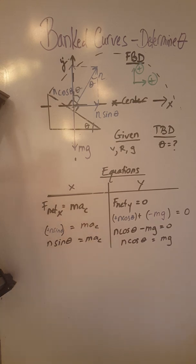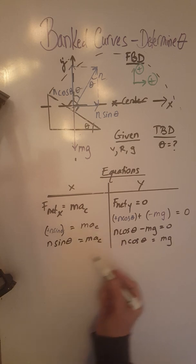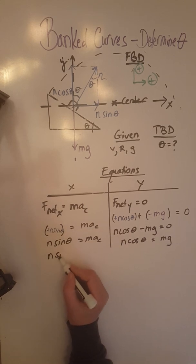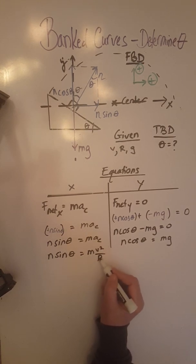But if you remember from lecture, the centripetal acceleration is v squared over r, the speed squared over the radius of the circle. So we can continue here by saying that n sine theta equals m v squared over r.